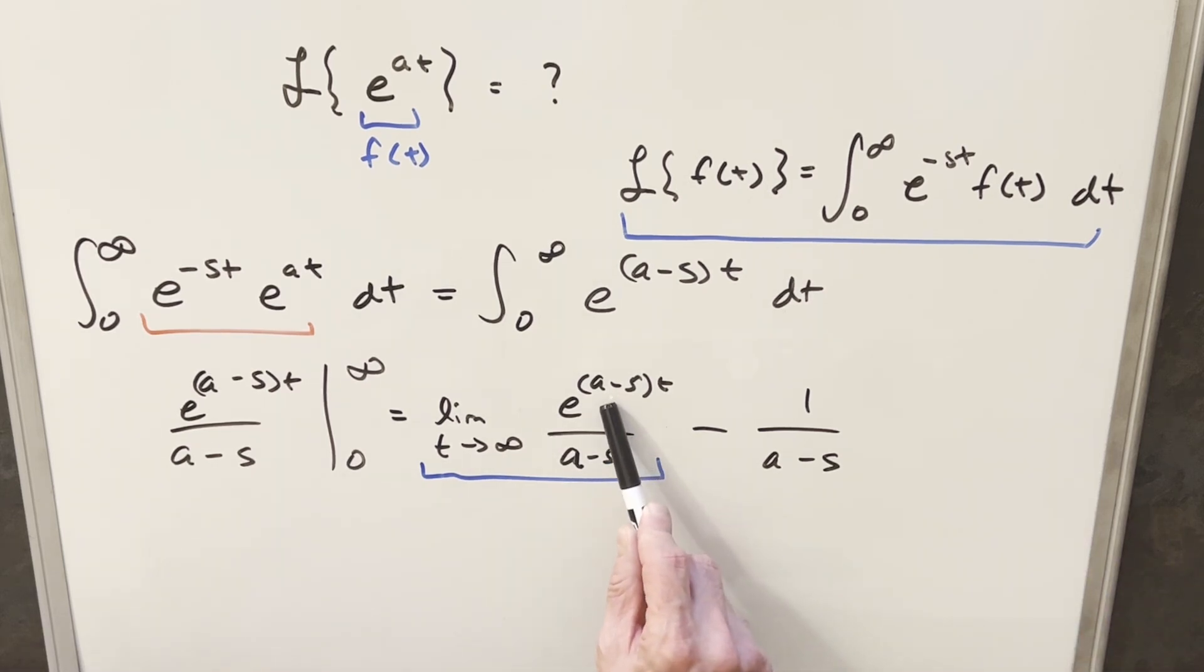The trouble we have is if a is greater than s, and we have some positive number here, and we plug in infinity, the whole thing is going to infinity and it diverges. So we need this thing to converge in order for this to work.